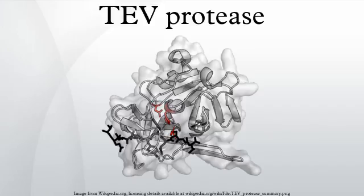The tobacco etch virus encodes its entire genome as a single massive polyprotein. This is cleaved into functional units by three proteases: P1 protease, helper component protease, and TEV protease. The native protease also contains an internal self-cleavage site, which is slowly cleaved to inactivate the enzyme.